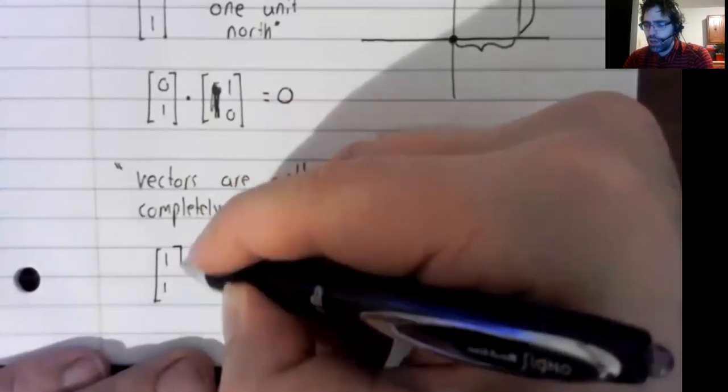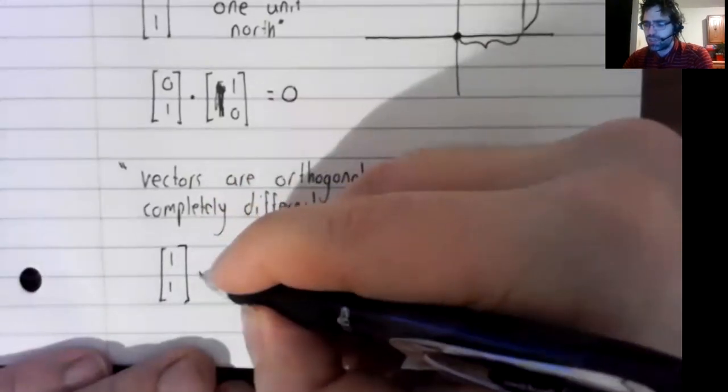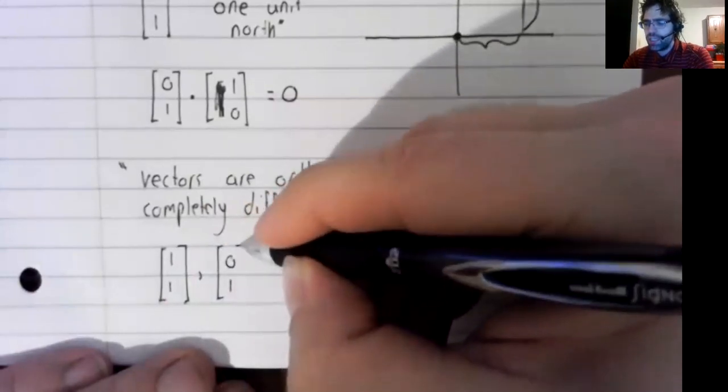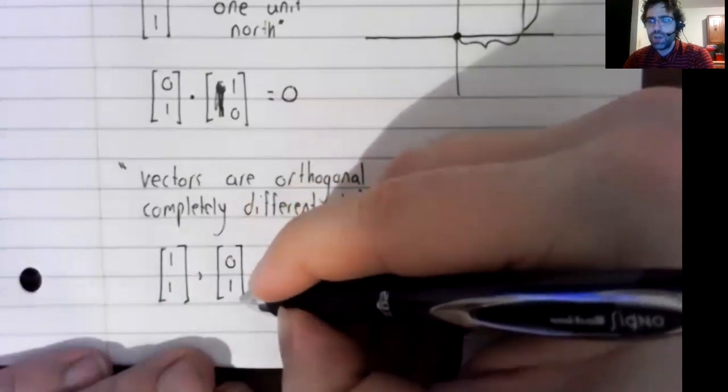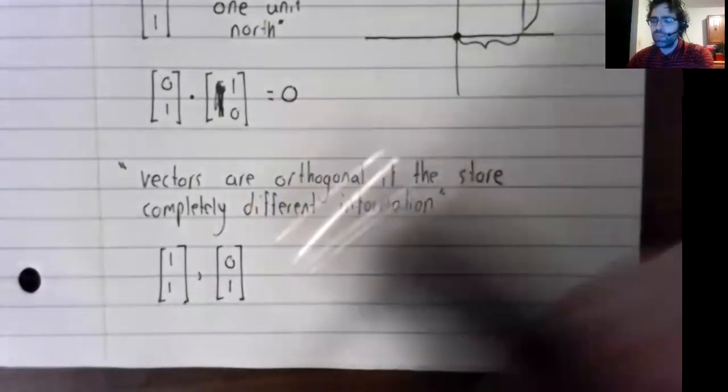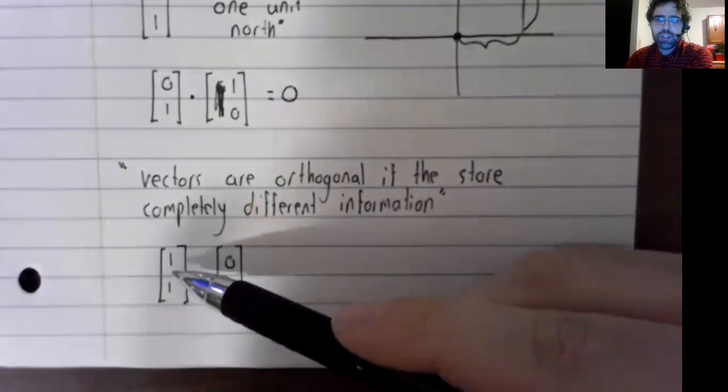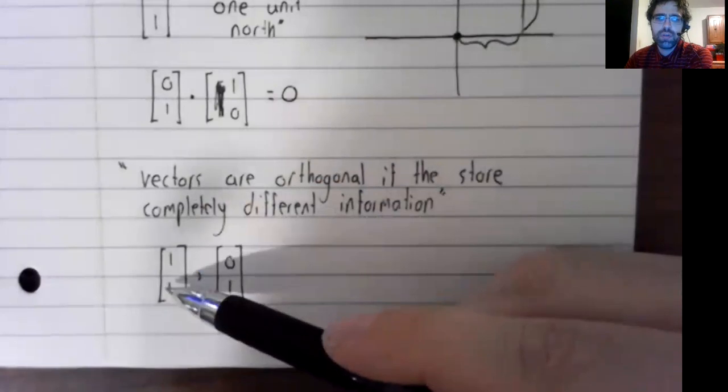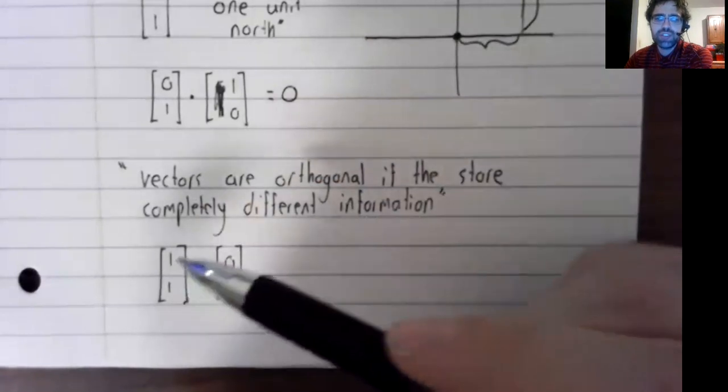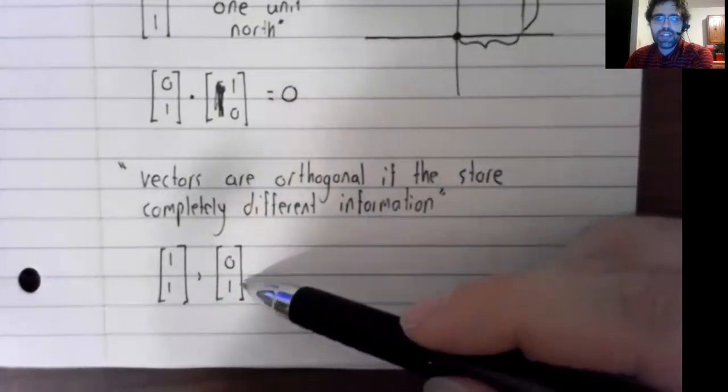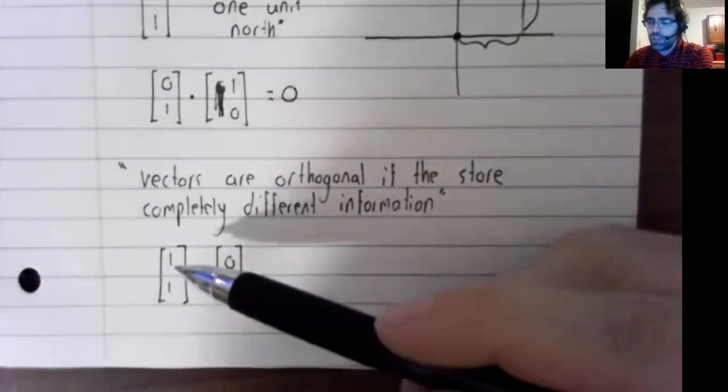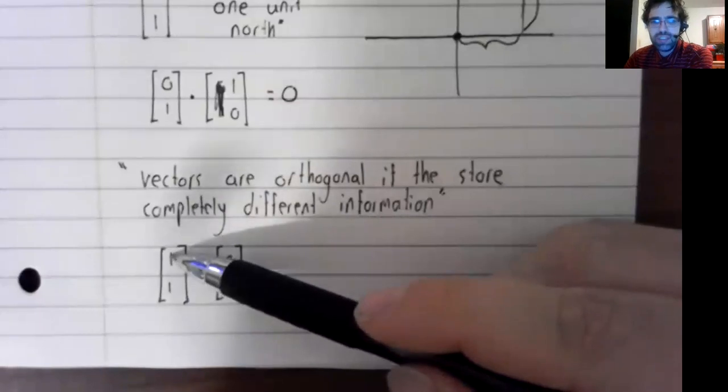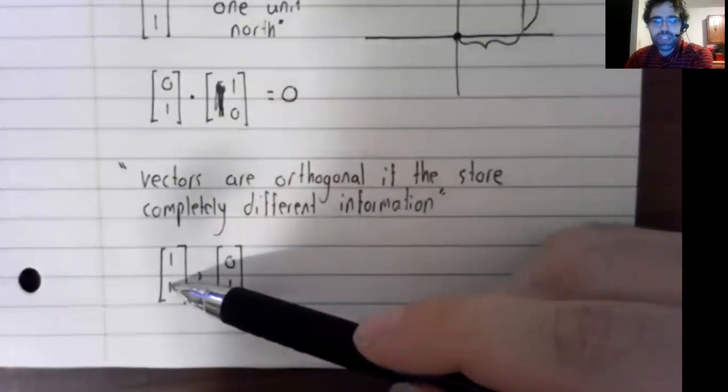By contrast, look at these two vectors. This vector stores the information one unit north, one unit east. This vector stores, I got those turned around, one unit east, one unit north.